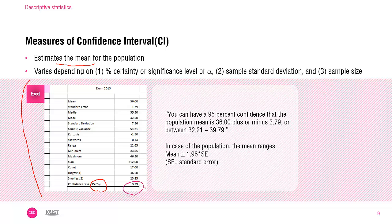In the figure below here, the 95% confidence interval is 3.79. This means that you can have a 95% confidence that the population mean is 36 plus or minus 3.79, or between 32.21 and 39.79.